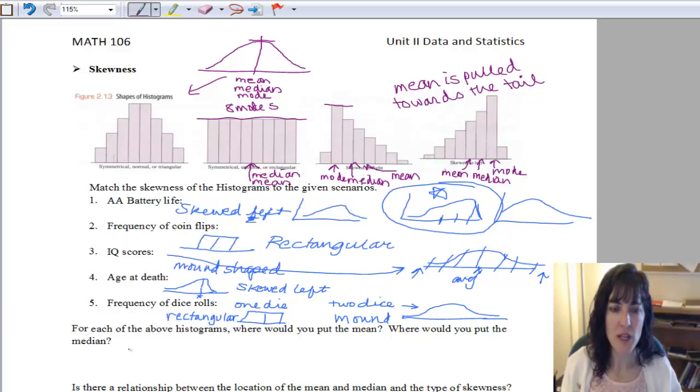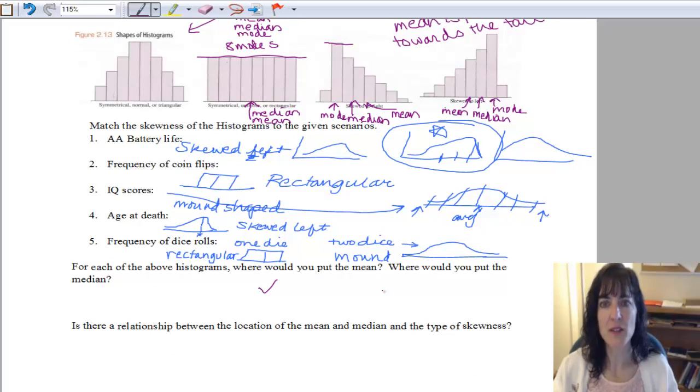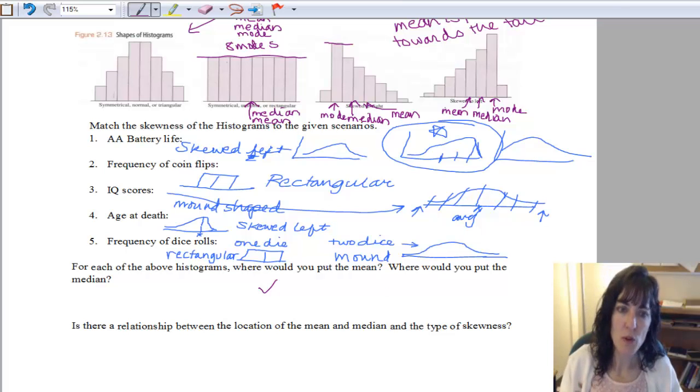So there you are. We put the mean and the median on each of the charts, that was this one. And then, is there a relationship between the location of the mean and the median and the type of skewness? So what we're looking for is trying to say, if we have a skewed left, well we have skewed right first, that's our first one, skewed right.